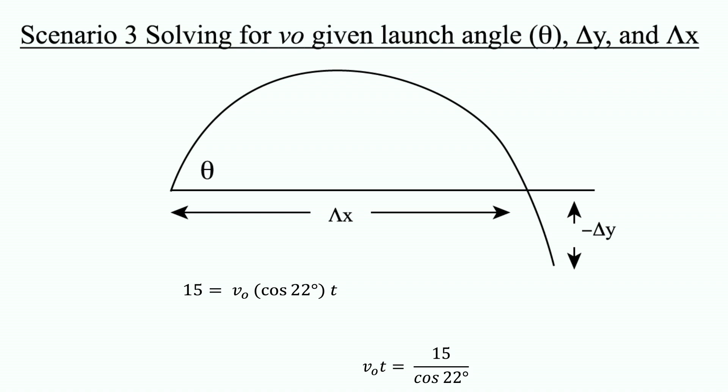Here you can use the displacement equation for both the x and y components, make an expression for v-naught t using the x component, and substitute that expression into the y component's displacement equation.